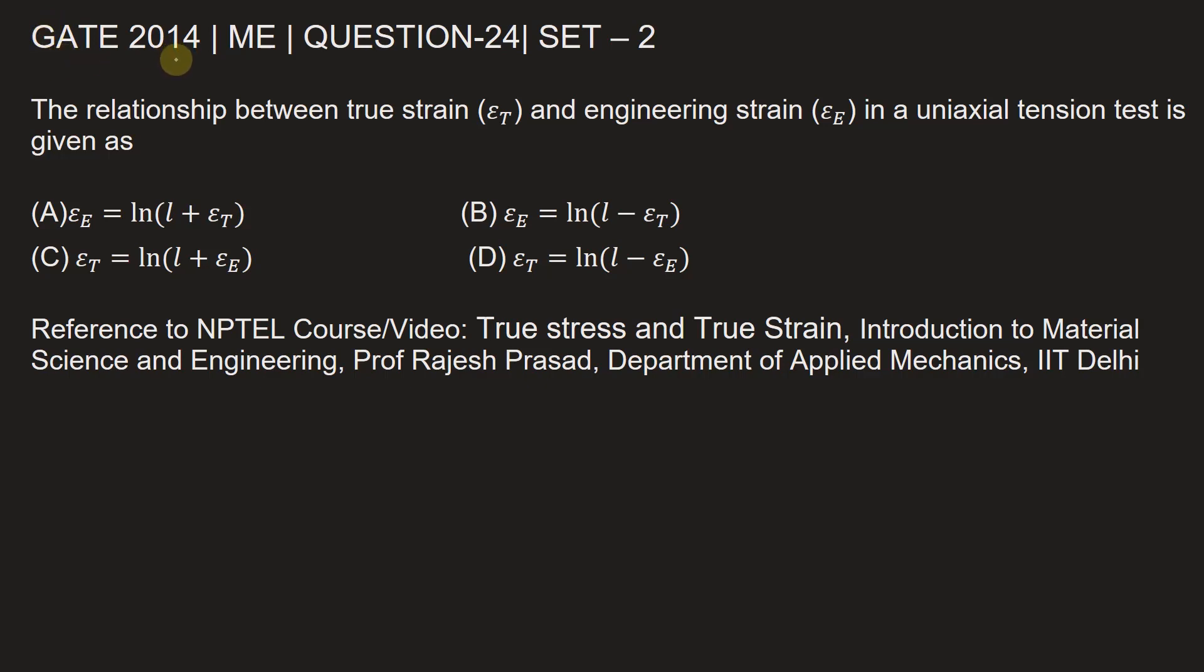This question is from Gate 2014 Mechanical Engineering paper, set 2, question number 24. The relationship between true strain epsilon_t and engineering strain epsilon_e in a uniaxial tension test is given as. Let's see how it is done.